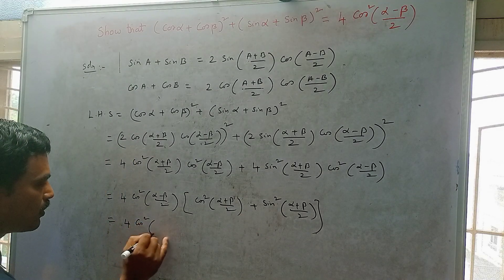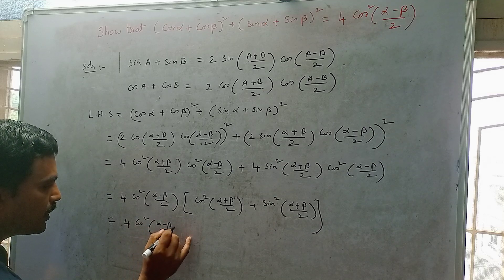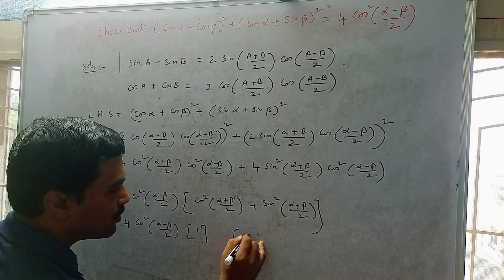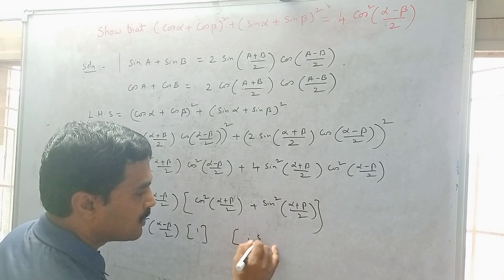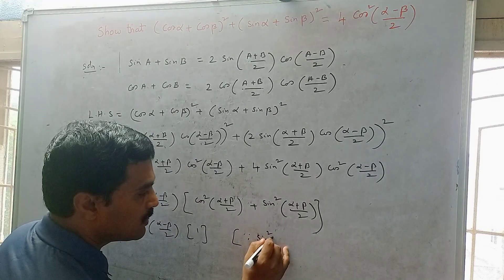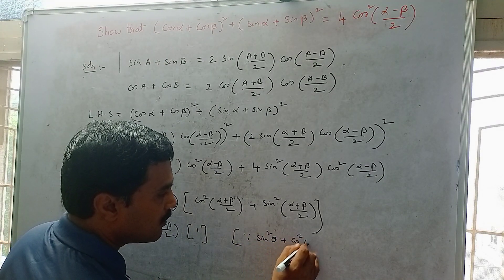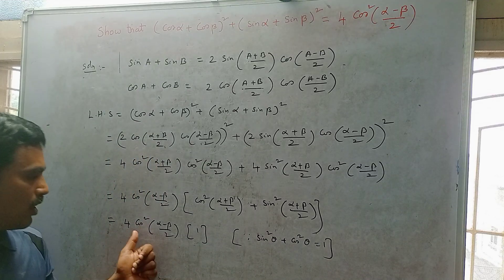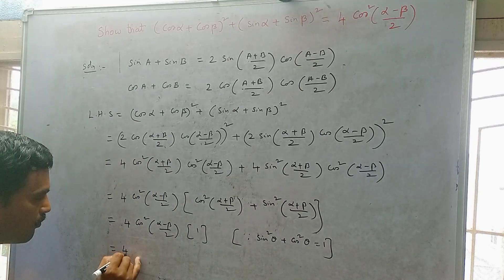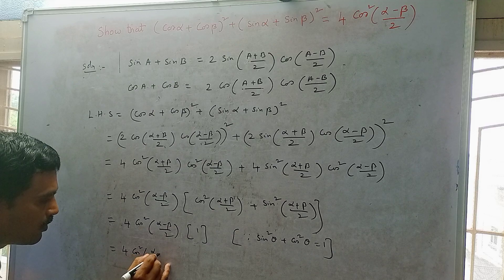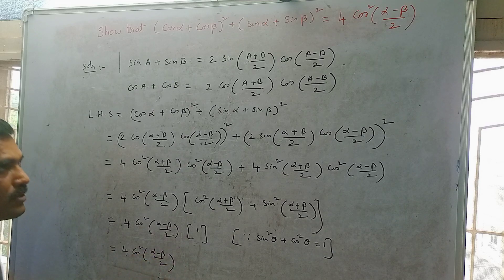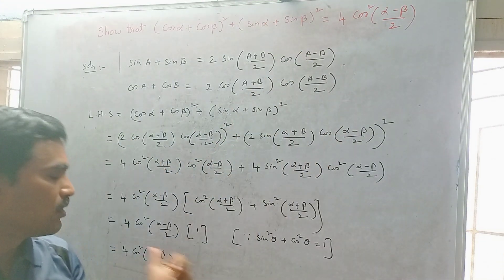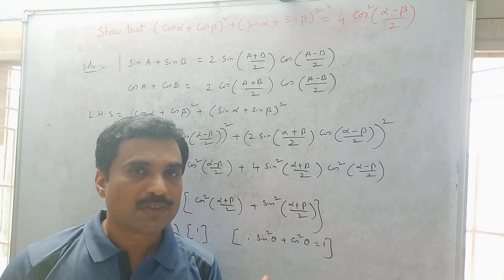Using sin²θ + cos²θ = 1, the expression simplifies to 4 cos²((α − β)/2), which is exactly the right hand side. Therefore we have proved the result.